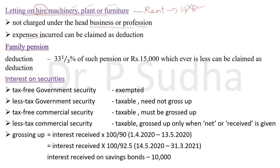The next income is family pension, which is different from pension charged under the head salaries. Pension is received by an employee after retirement from the employer. Family pension, however, is received after the death of the employee — the family members receive pension from the employer. Since there is no employer-employee relationship between the family member and the employer, this is charged under the head other sources. You can claim a standard deduction of 33⅓% of such pension or 15,000 rupees, whichever is less.